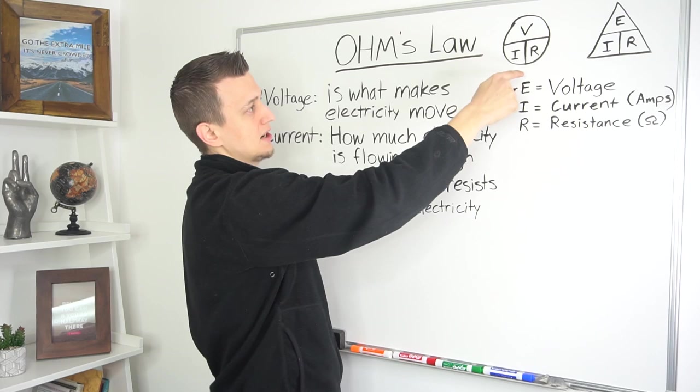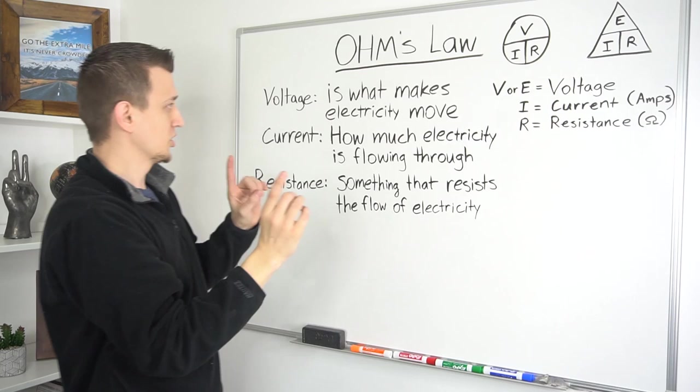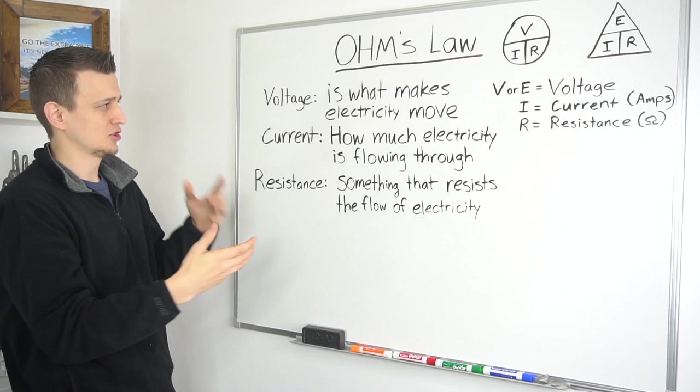The purpose of Ohm's Law, that formula right there, is very simple. For example, if a person has two out of the three of the values, they will always be able to figure out the third one. So if you have the volts and the resistance, but you don't have the amps of a component or a circuit, you can figure that out using this formula right here.